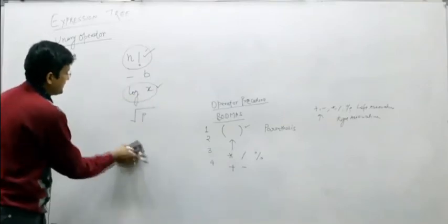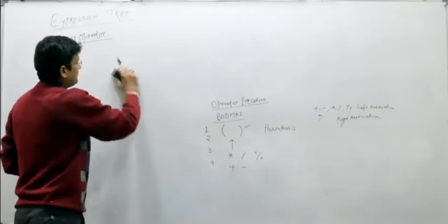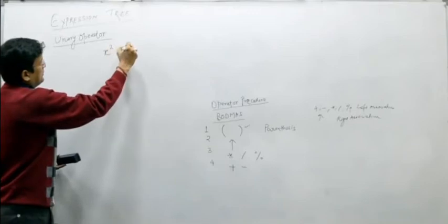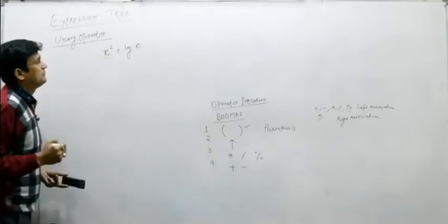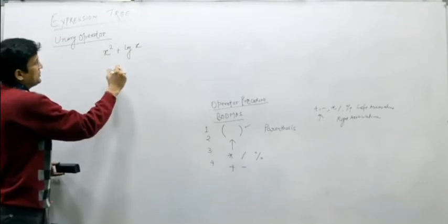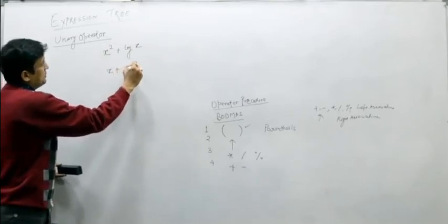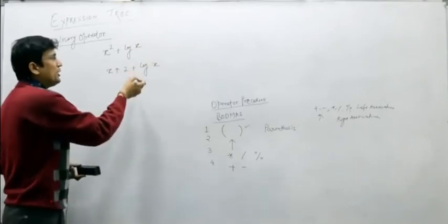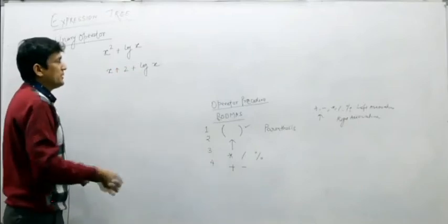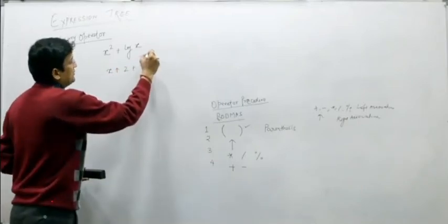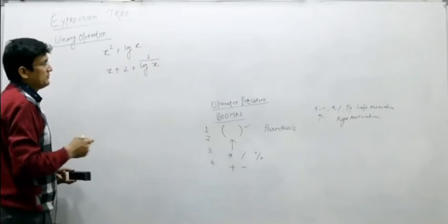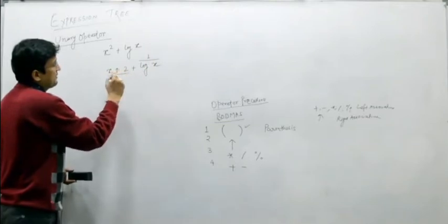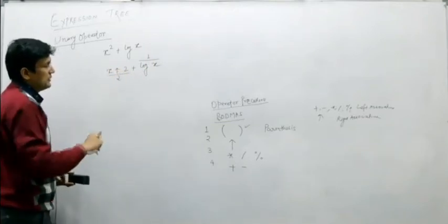Let us take a mixed expression and build its expression tree. Consider x squared plus log x, which can be written as x raised to the power 2 plus log x. Unary operators have higher precedence than binary operators. So, log x is taken as sub-expression 1. Then, between the exponent and plus, exponent has higher precedence, so x raised to the power 2 is sub-expression 2.